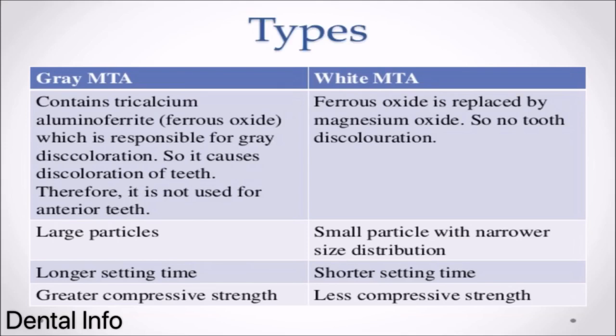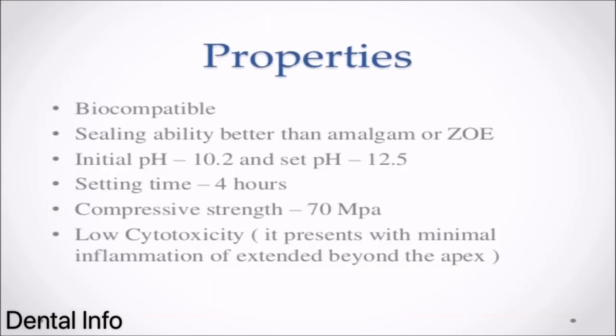White MTA: Ferrous oxide is replaced by magnesium oxide, so no tooth discoloration occurs. Has small particles with narrower size distribution, shorter setting time, and less compressive strength. Properties of MTA: Biocompatible. Sealing ability better than amalgam or ZOE. Initial pH 10.2 and set pH 12.5. Setting time 4 hours. Compressive strength 70 MPa. Low cytotoxicity, presenting with minimal inflammation if extended beyond the apex.